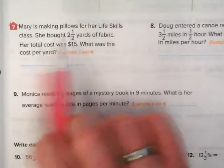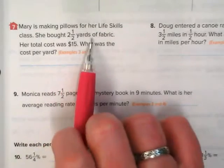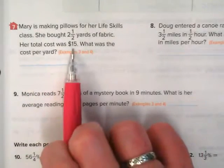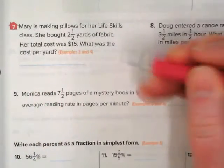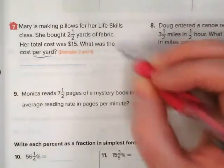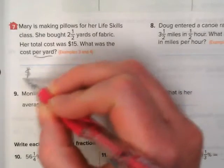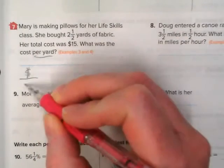Okay, we have Mary is making pillows for her life skills class. She bought two and a half yards of fabric. Her total cost was $15. What was the cost per yard? Whenever we have money and we're doing a ratio, the money is going to be on top and in this case the yards is going to be in the denominator.